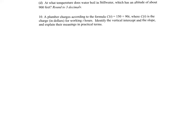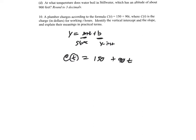For number ten, a plumber charges according to a formula where C(t) is the charge in dollars after t working hours. We want the vertical intercept, slope, and their meanings. Using the standard linear form y = mx + b, with t instead of x, the formula is C(t) = 150 + 90t.